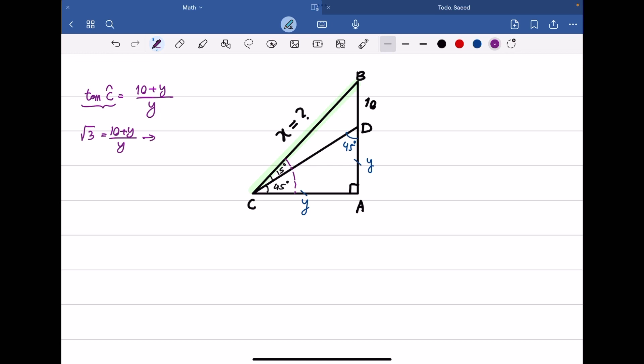This gives Y times square root of 3 equals 10 plus Y. Taking Y terms to the left side: Y times (square root of 3 minus 1) equals 10, so Y equals 10 divided by (square root of 3 minus 1).